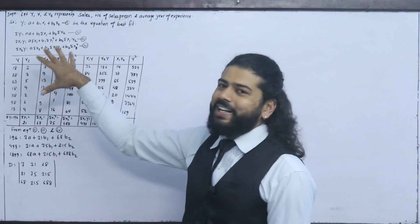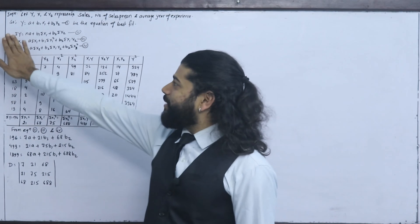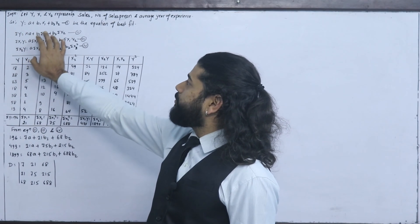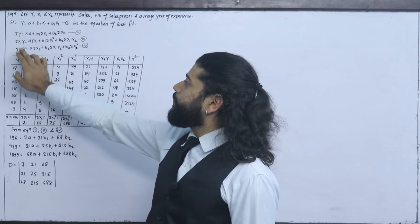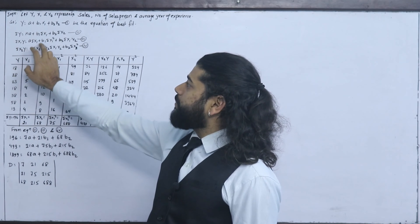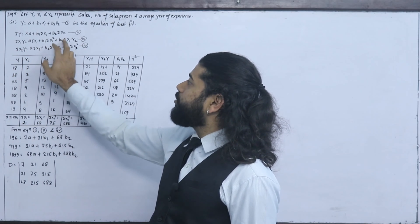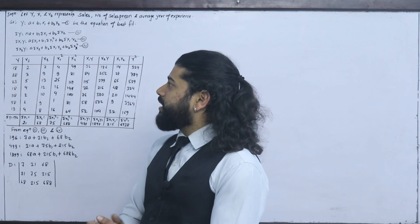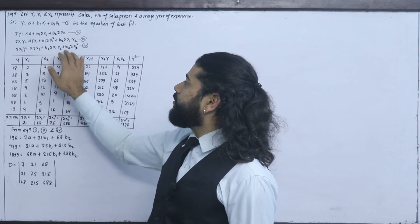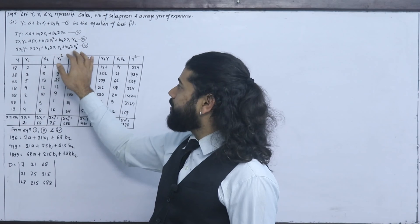The three normal equations are: Equation 1 — summation y equals na plus b1 summation x1 plus b2 summation x2. Equation 2 — summation x1y equals a summation x1 plus b1 summation x1 squared plus b2 summation x1x2. Equation 3 — summation x2y equals a summation x2 plus b1 summation x1x2 plus b2 summation x2 squared.